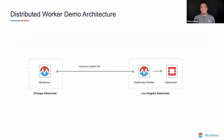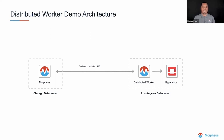Let's take a quick look at a demonstration architecture. There's a centralized Morpheus instance running in a Chicago data center. There is a Los Angeles data center with an OpenStack hypervisor that we want to interact with, but the Morpheus instance in Chicago does not have direct reachability to that hypervisor. So Morpheus can't directly reach the OpenStack hypervisor, which is why we're leveraging the distributed worker to proxy that communication. The distributed worker reaches outbound to the Morpheus instance, so no firewall rule is needed and no VPN is necessary.